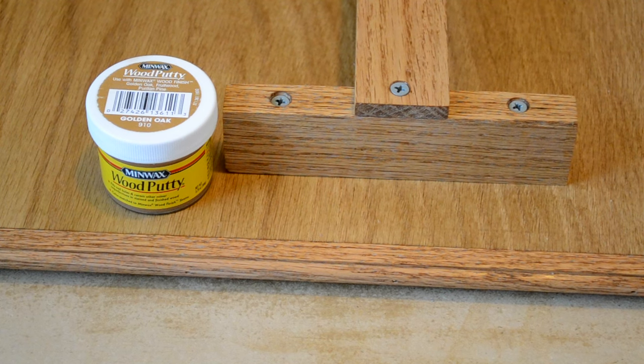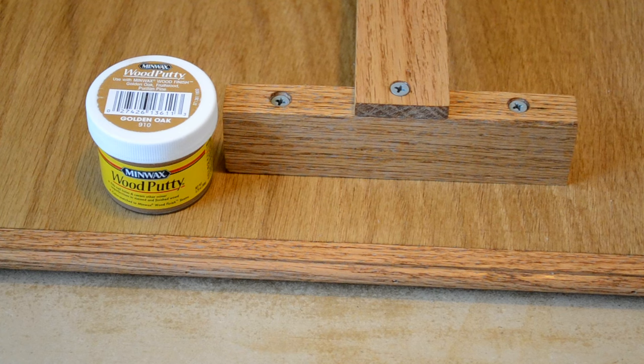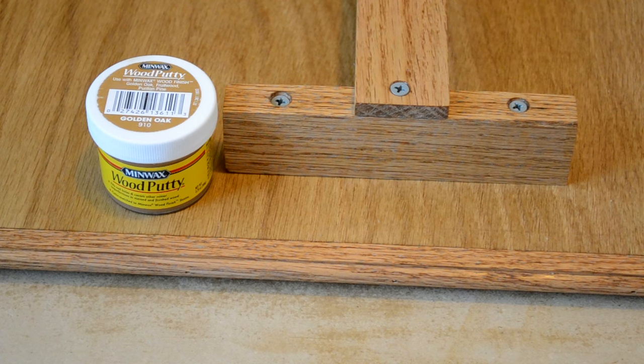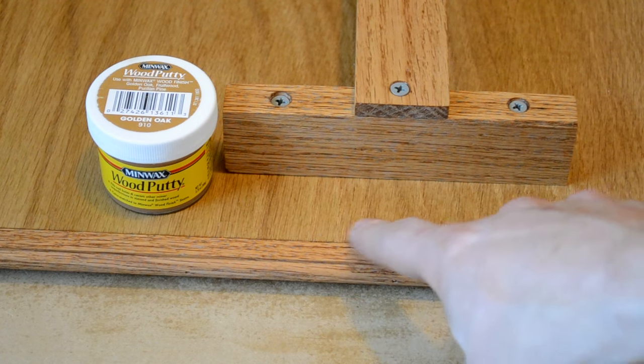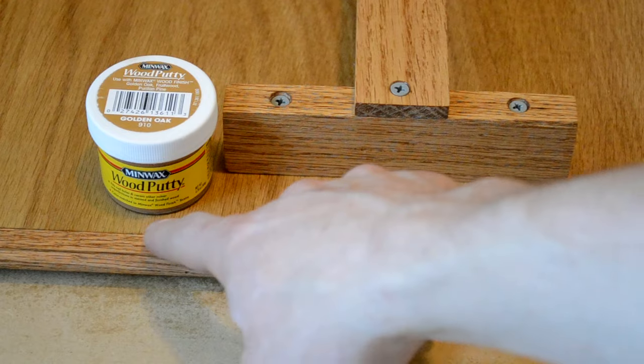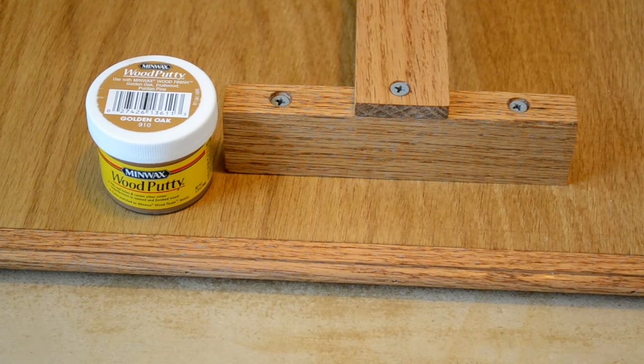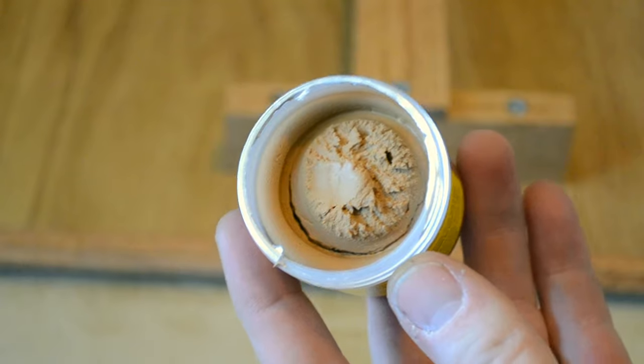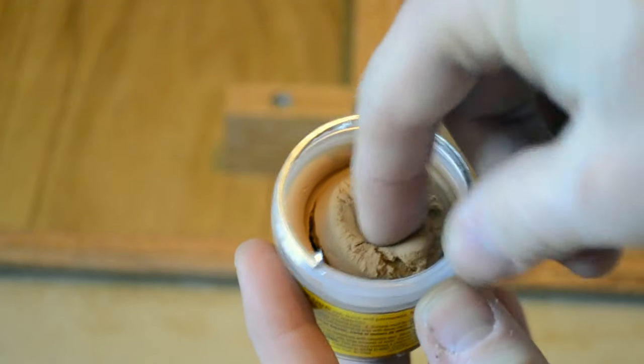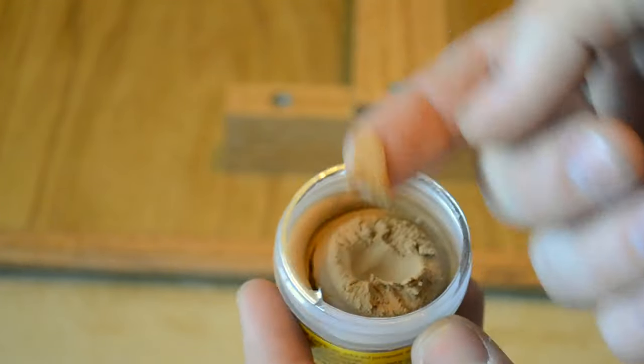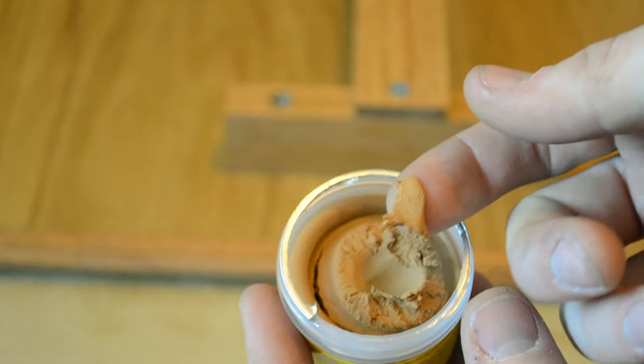So next what I'm going to do is I'm going to use some Minwax wood putty. The color that I'm using actually matches the color of the stain, so it will blend in very well. All I'm going to be doing is filling in some of these very minute little cracks in the wood to give it the best possible finish that I can. This stuff is very easy to use. It's a nice, soft little putty. Just pull some out on your finger and rub it into the cracks.